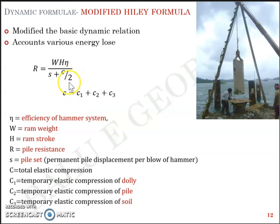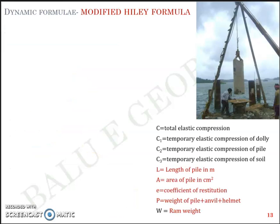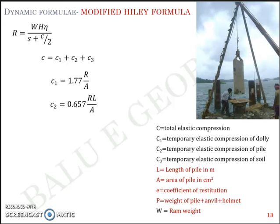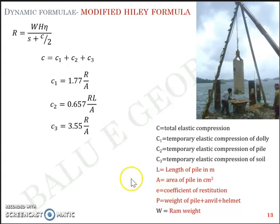All three elastic settlements combined give c. You add c1 + c2 + c3 to get c and divide by 2 — that is the new term in the Modified Hiley's formula: Wh·η / (s + c/2). The individual terms are: c1 = 1.77R/A, c2 = 0.657RL/A, c3 = 3.55R/A. Here, L is the length of the pile in meters, A is the area of the pile in cm², and e is the coefficient of restitution.